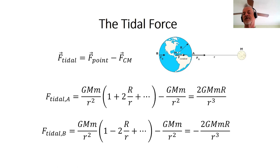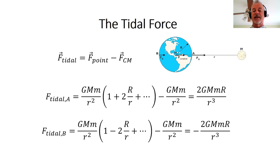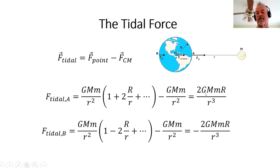If we do the same thing at point B, the only difference is the sign inside the parenthesis. Again, two terms cancel, and in this case the tidal force is −2GMmR/r³. These are the tidal forces at points A and B, and notice that they have opposite signs: the one at A is positive and the one at B is negative.